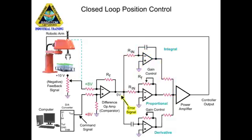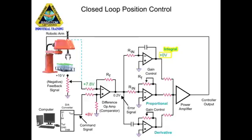With an error signal of zero, the output voltage of the integral amplifier is zero. The integral amplifier increases gain depending on the duration of the error signal — the longer the error is present, the larger the amplifier gain. The output of the integral amplifier increases and is further amplified by the power amp to overcome the friction and mass of the robotic arm, completing the final move to the desired position.